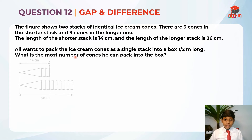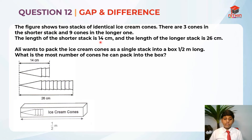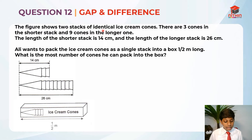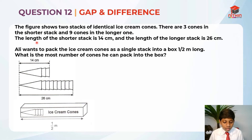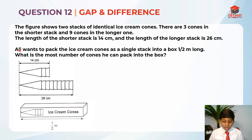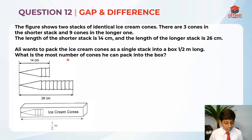Question 12 is testing us on the concept of gap and difference. The figure shows two stacks of identical ice cream cones. There are 3 cones in the shorter stack and 9 cones in the longer one. The length of the shorter stack is 14 cm and the length of the longer stack is 26 cm. Ali wants to pack the ice cream cones as a single stack into a box half a meter long. What is the most number of cones that he can pack into the box?